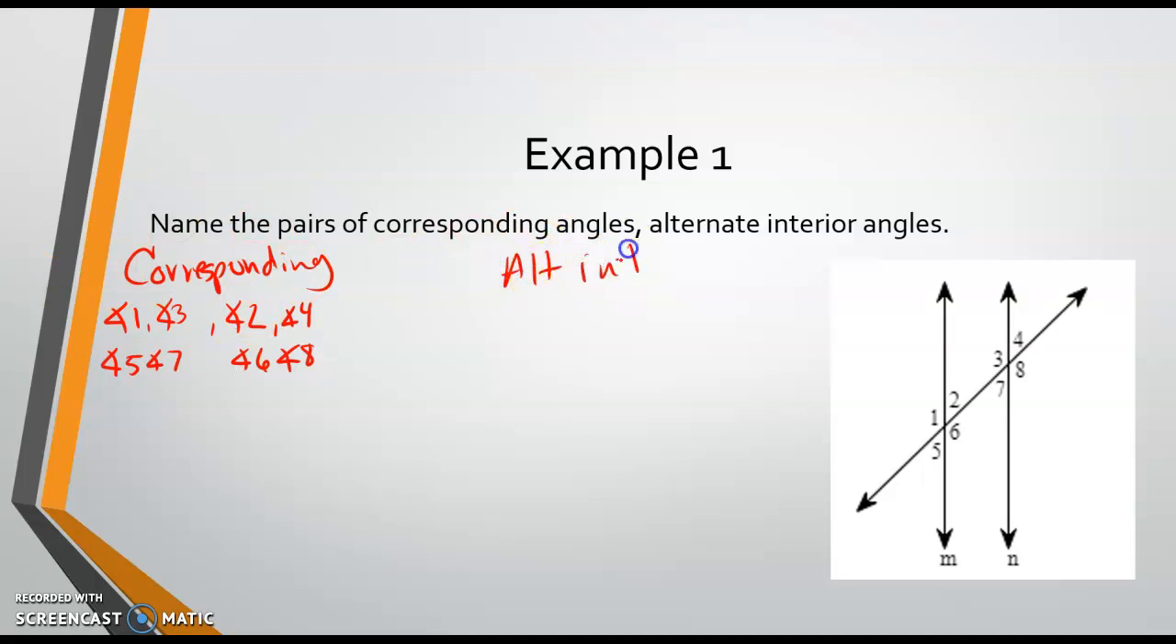alternate interior. Interior meaning these inside. So, we're only worried about these four angles right here. Alternate meaning alternating, right? Alternating is every other opposite sides. And like I said before, we want an angle from each line. So,